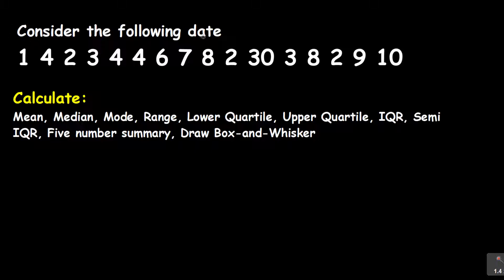I'm going to do it in short segments. At the end of this chapter I'll be bringing you some practical exam questions to look out for. Now consider the following data — they've given us a dataset and it says calculate the following: the mean, the median, the mode, the range, the lower quartile, the upper quartile, the interquartile range, the semi-interquartile range, a five number summary, and draw a box and whisker plot.